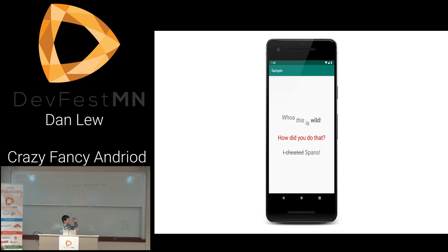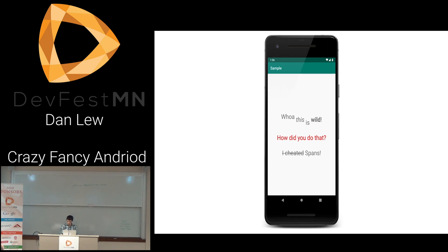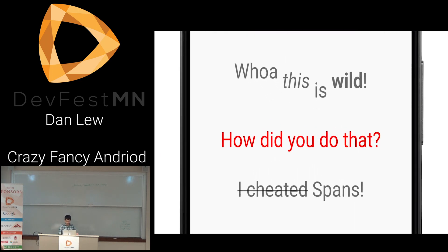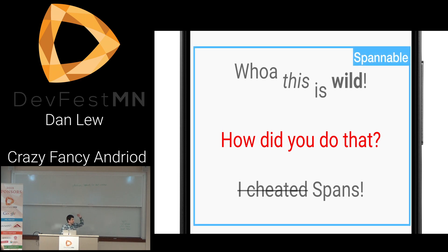Here's fancy — this whole thing is one text view and one string. This is what's known as a Spannable. By the way, show of hands — how many people have worked with Spannables before? The Spannable is a special type of CharSequence, sort of like a string, but it allows you to attach things called Spans to it. Spans are a special Android way of marking up text.